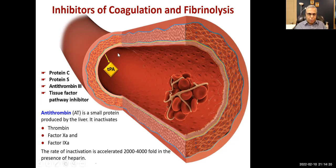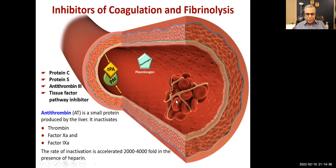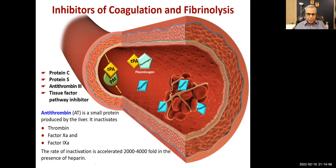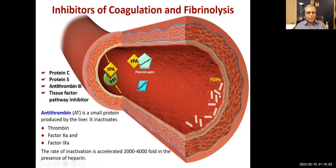Tissue plasminogen activator is normally in inactive form because of plasminogen activator inhibitor. Plasminogen must be converted to plasmin to break down the clot. Through certain mechanisms this inhibition is removed, and tissue plasminogen activator converts plasminogen into plasmin. Plasmin breaks down the fibrin fibers, producing fibrin degradation products that we look for in conditions of high clotting activity.